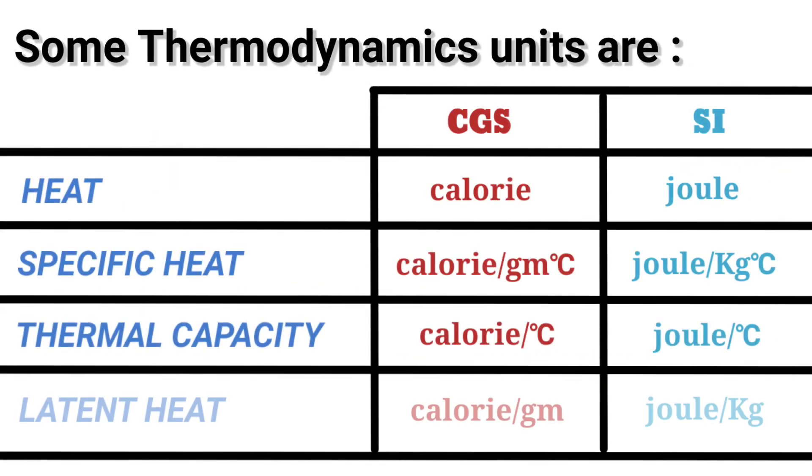Some thermodynamics units are heat: CGS calorie, SI joule. Specific heat: CGS calorie per gram degree C, joule per kg degree C. Thermal capacity: calorie per degree C, joule per degree C.